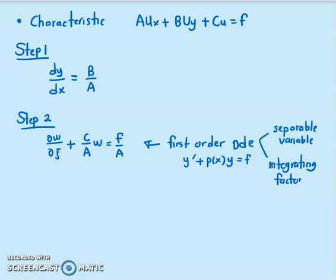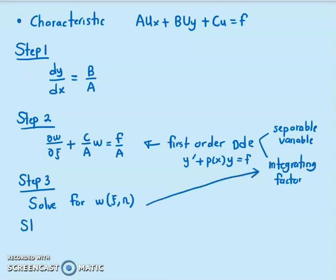In most cases you look at integrating factor. Now step three will be we solve for ω(ψ,η). So we write in this form and then we solve it, obviously using these two approaches. Now your final step, we transform back ω(ψ,η) to u(x,y). This is the method to solve the first order PDE using characteristic.